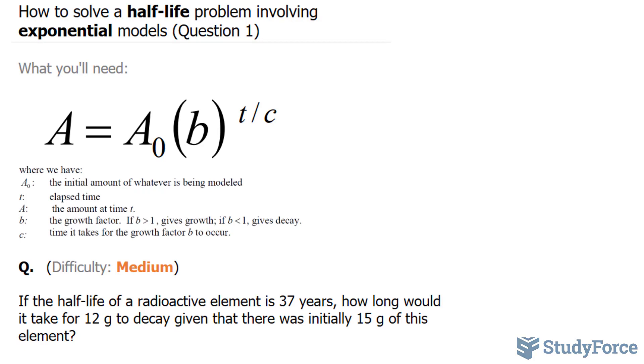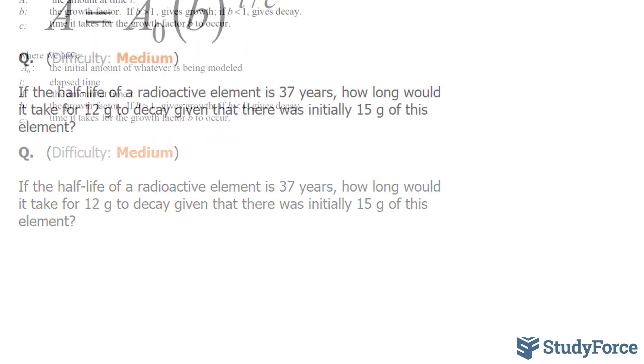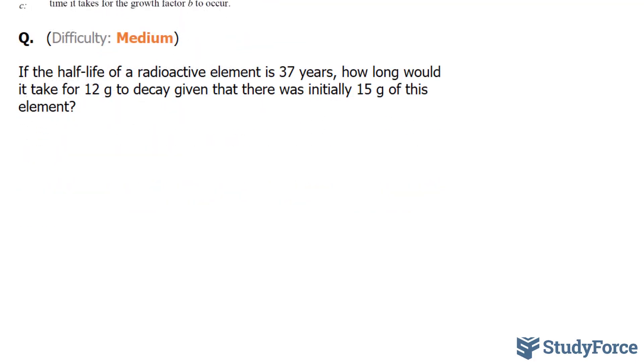The question reads, if the half-life of a radioactive element is 37 years, how long would it take for 12 grams to decay, given that there was initially 15 grams of this element? Let's reread this question and this time highlight some key facts.